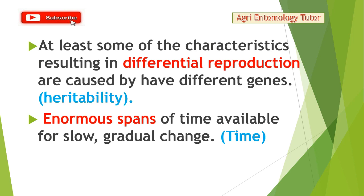Heritability: due to differential reproduction, some characters are heritable from one generation to another in insects. Time: the enormous span of time available, combined with insects' short generation time, leads to gradual change and ultimately to the evolution of insects.